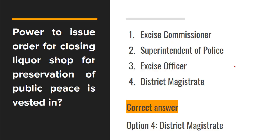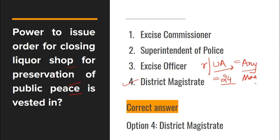Next: Power to issue an order for closing a liquor shop for preservation of public peace is vested in the district magistrate, under Section 24. Also note under Section 24: if there is a riot or an unlawful assembly occurring or about to occur, then any magistrate can order the shop to be closed. For preservation of public peace specifically, it is the district magistrate who acts under Section 24.